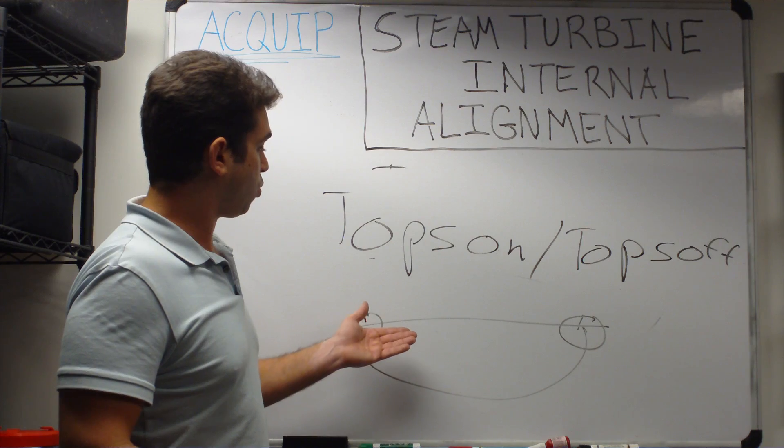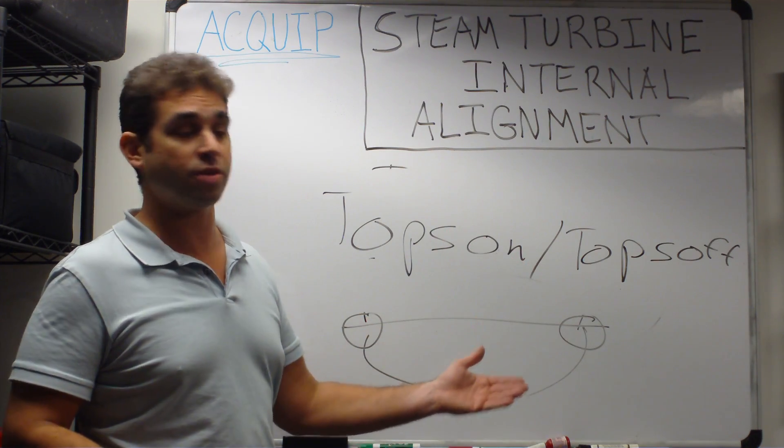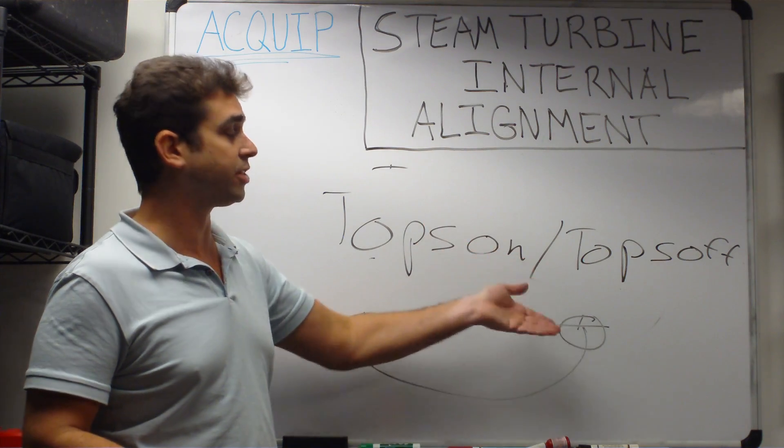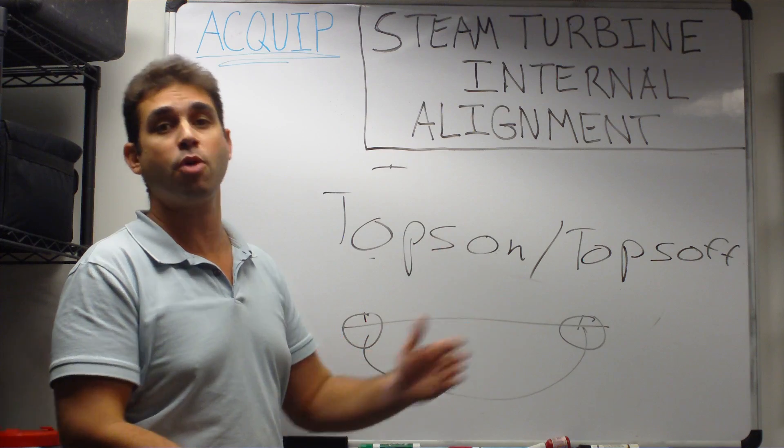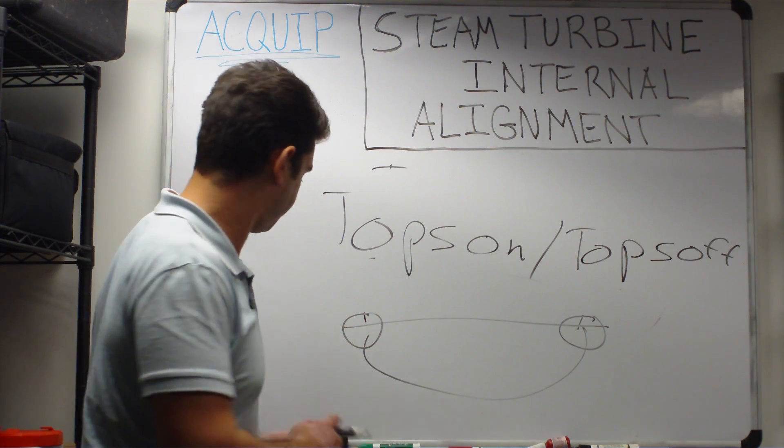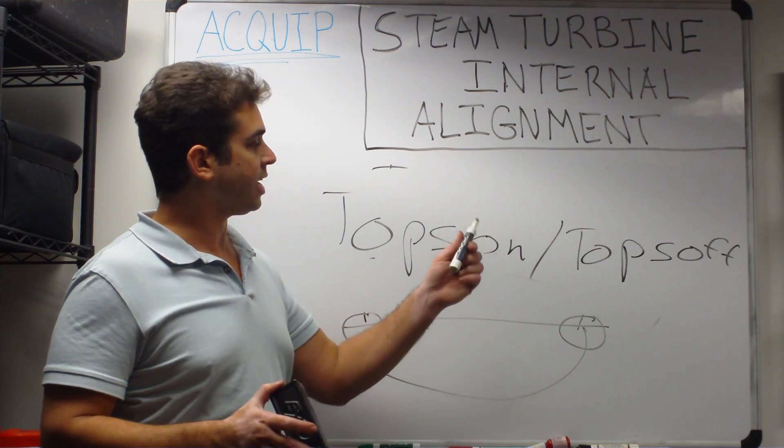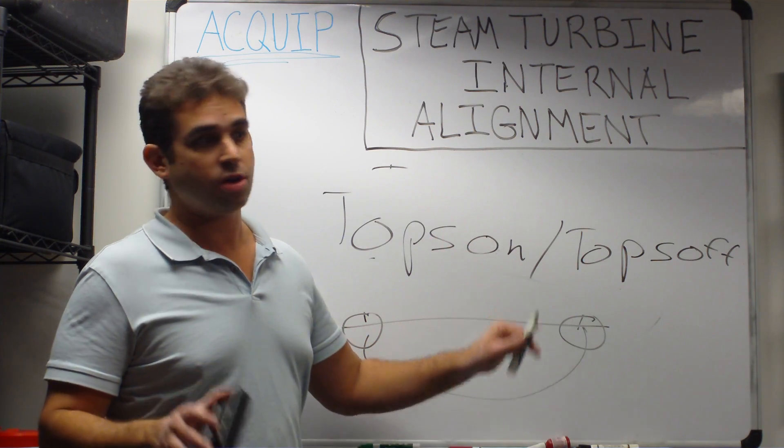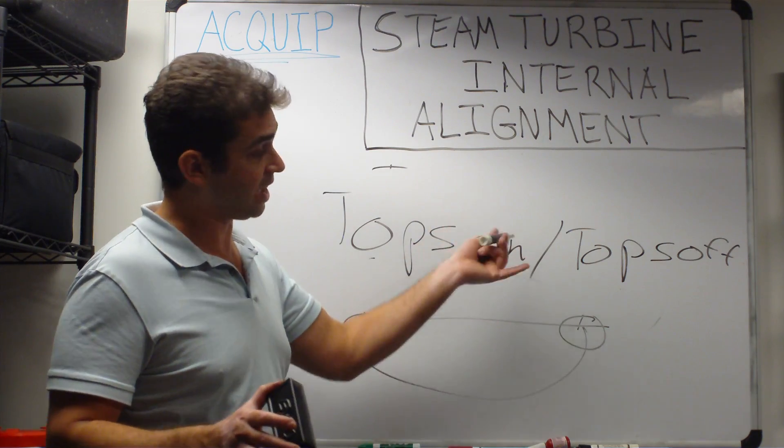While we're doing that, we're able to make all of our adjustments more easily since the top is off, and we can always calculate for the top being back on with that initial top on to top off deviation. This type of alignment is the best kind to do for a steam turbine, and it's the only kind that you can do for a gas turbine.